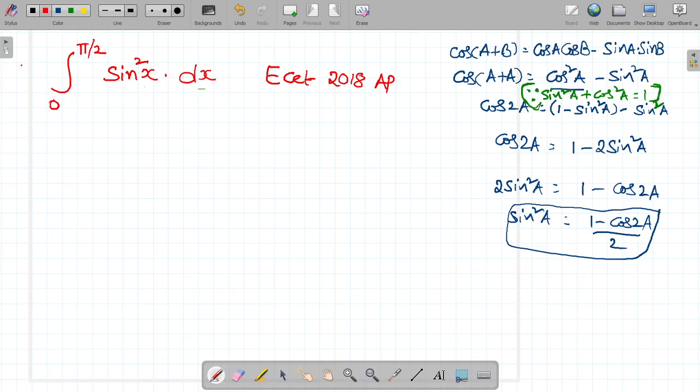Today, we are discussing an integration problem. It was asked in ESET 2018 AP examination. Let us go to the problem. Integral 0 to pi by 2 sin square x into dx.